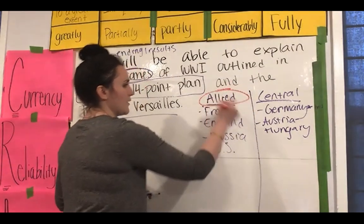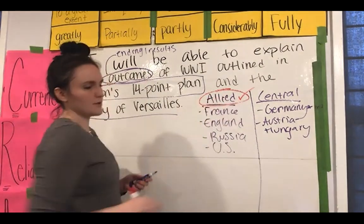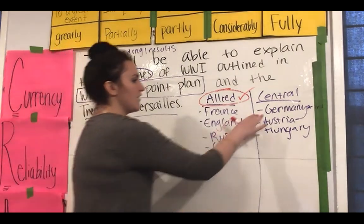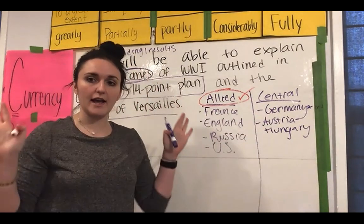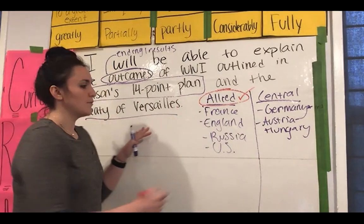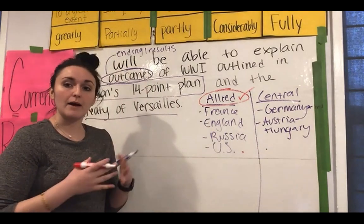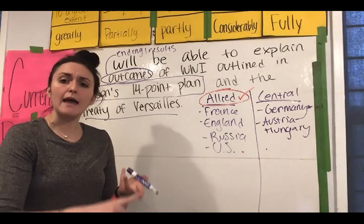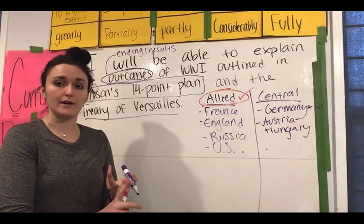The Allied Powers win World War I. Once it's clear that the Allied Powers are going to win, eventually Germany, Austria-Hungary, and the Central Powers give up and say okay, you win. At that point it's the end of the war, and both sides need to come to an agreement about how the war will end, how the fighting will officially stop, and what will be the plan to prevent another World War I in the future.